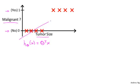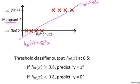If you take this training set and fit a straight line to it, maybe you get a hypothesis that looks like that. That's my hypothesis, h of x equals theta transpose x. If you want to make predictions, one thing you could try doing is then threshold the classifier output at 0.5.